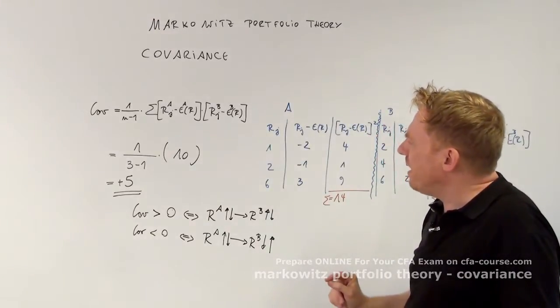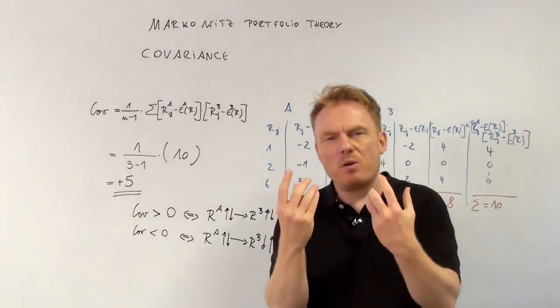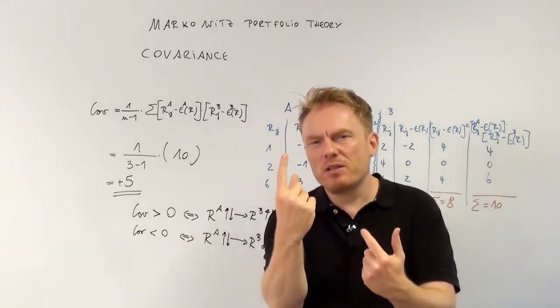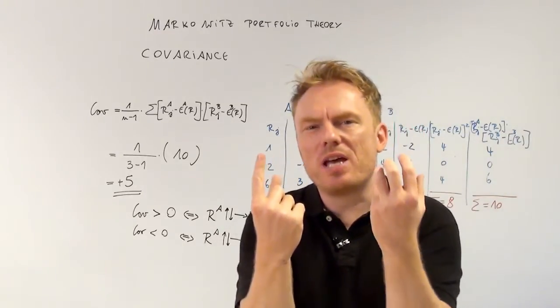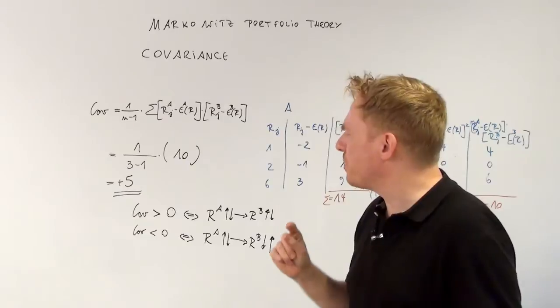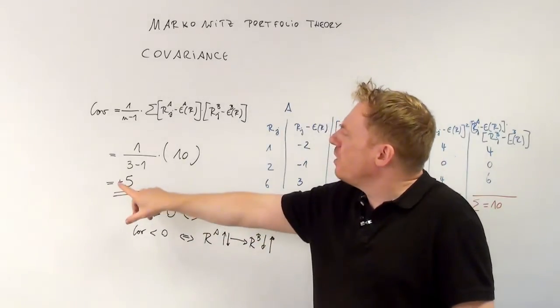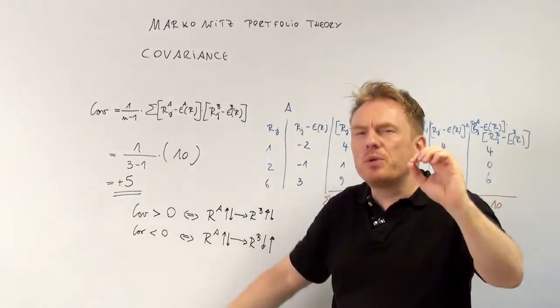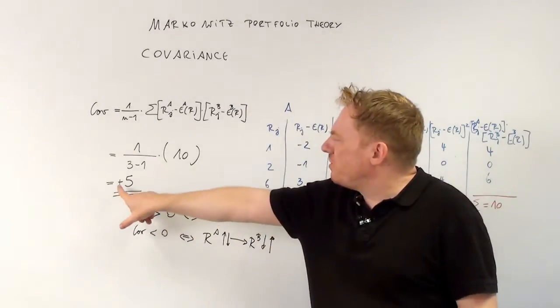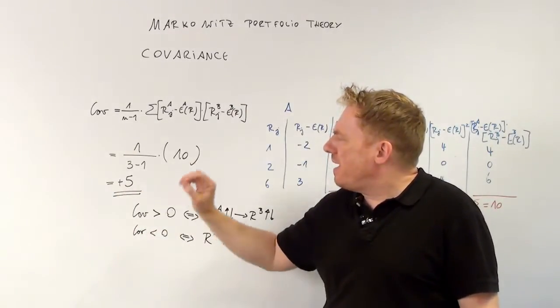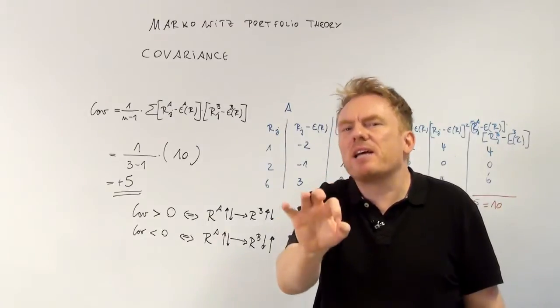Covariance indicates if one share rises, what does the other share do? That's important to understand, which means the only thing we need to know is whether it is positive or negative.